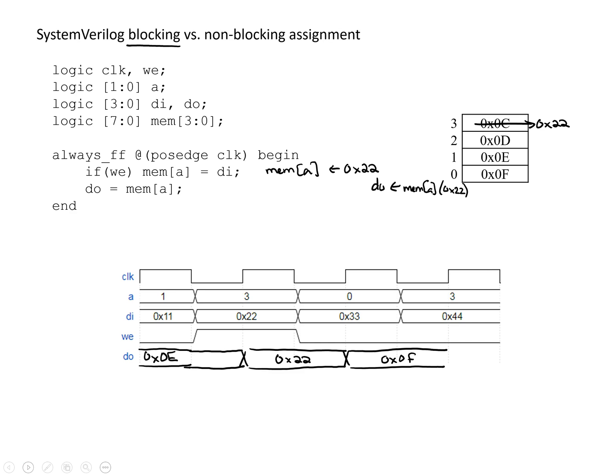Finally, on the last rising edge of the clock, write enable is 0 again so we're not writing anything — just reading. In this case we're reading address 3. Looking in our memory array, address 3 is 0x22 from the previous write, so we read out 0x22. That's an example of how the system behaves with blocking assignments.